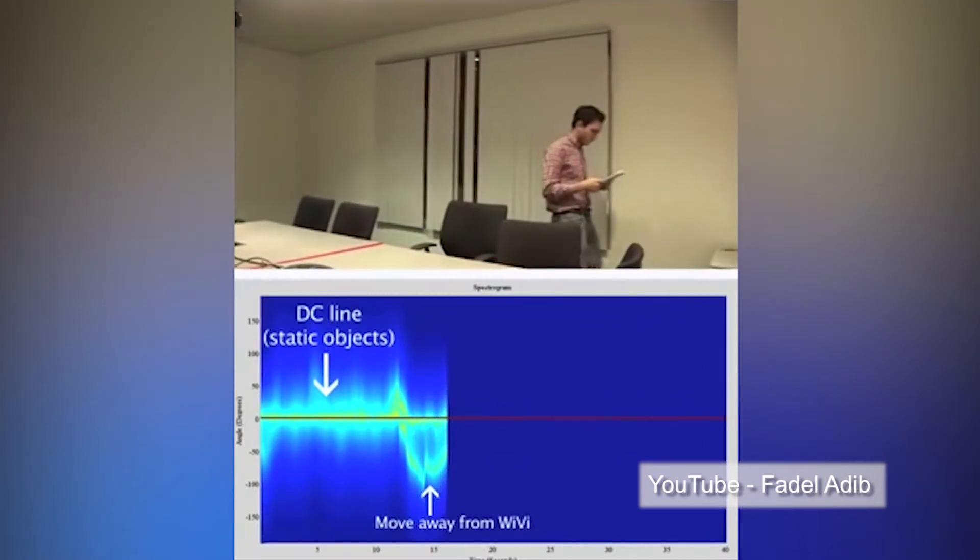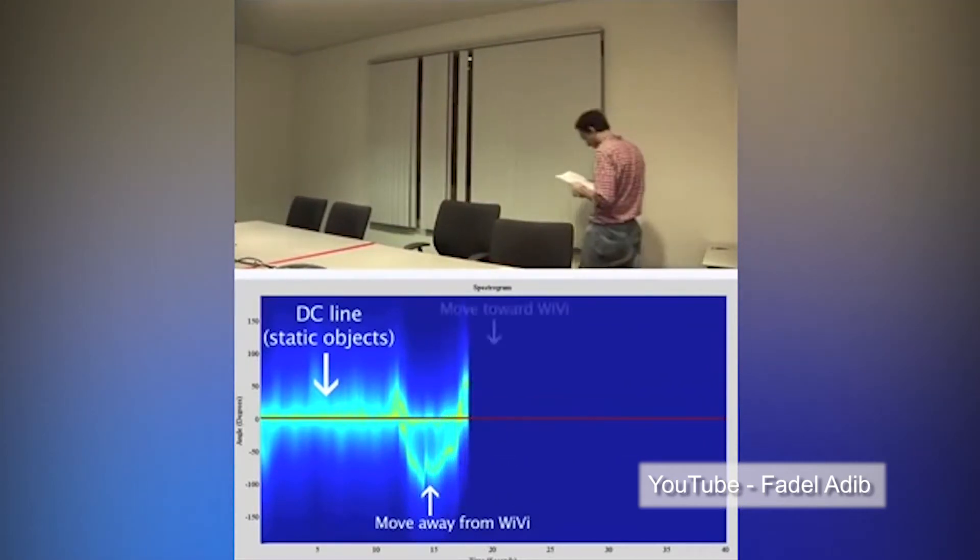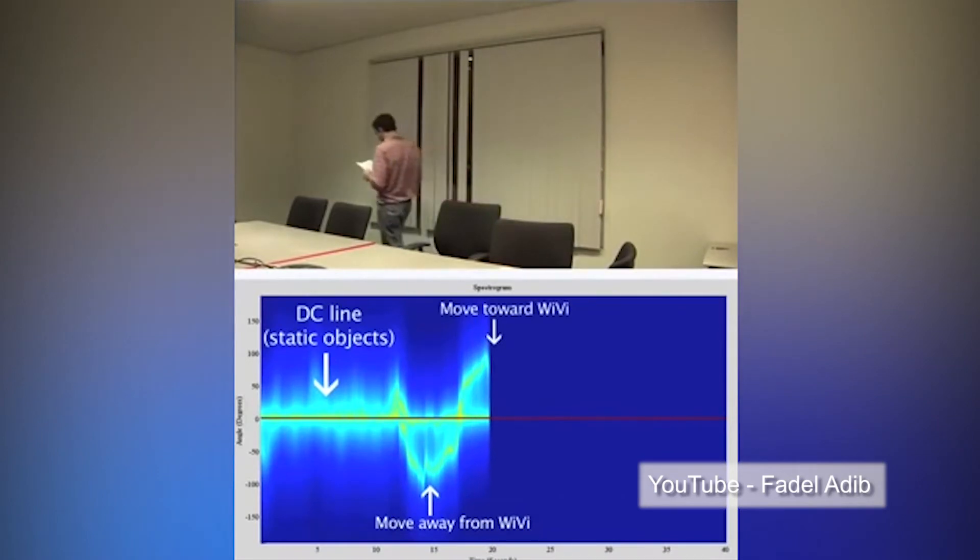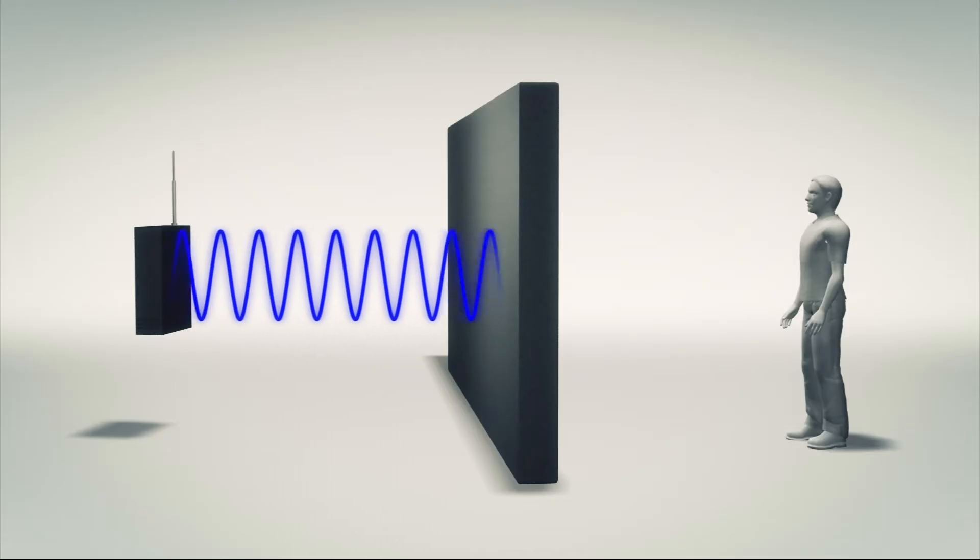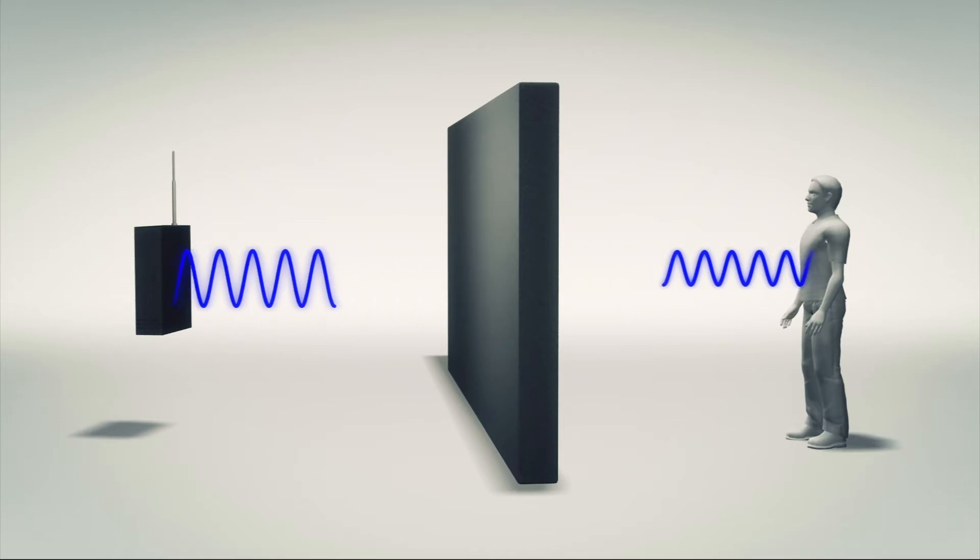Scientists at MIT have developed a low-cost form of X-ray vision using Wi-Fi signals. The technology, christened YV, uses a low-power Wi-Fi signal and its reflections to track the movements of individuals even when they pass behind a wall.